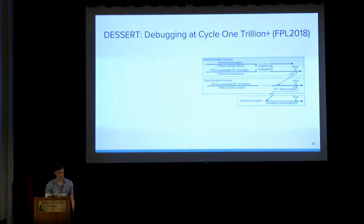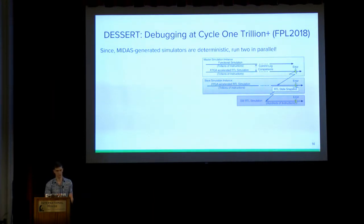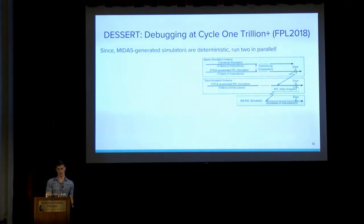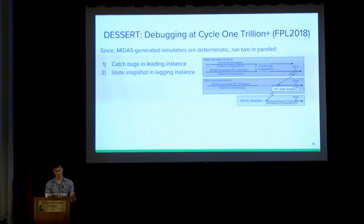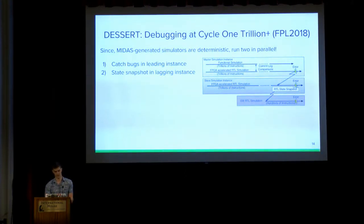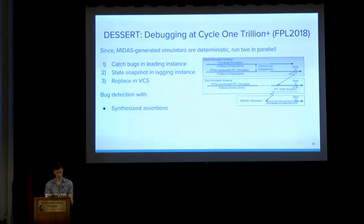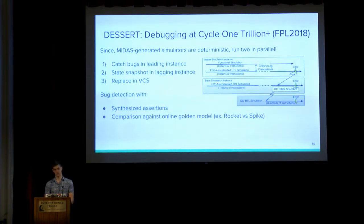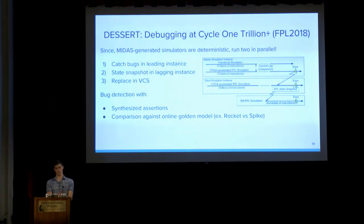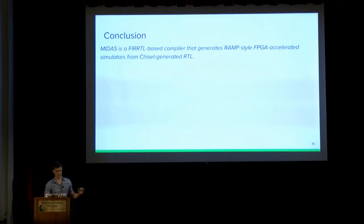Another cool feature is DESSERT, which attacks the debuggability challenge with FPGA prototypes and FPGA-accelerated simulators. We run two different simulations in parallel — a leading instance and a lagging slave instance. In the leading instance we catch a bug; in the lagging instance we get a state snapshot of the failing target some cycles before it actually fails, then replay it in VCS. That gives you a full-visibility waveform of the failing target. We detect bugs by synthesizing assertions — which are ubiquitous in Chisel-generated RTL from Rocket Chip and BOOM — and by synthesizing prints that allow commit log comparisons, for example Rocket's commit log versus Spike.